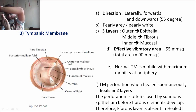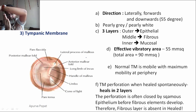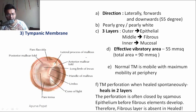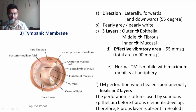Due to this orientation, when light is thrown onto the tympanic membrane, it reflects into the antero-inferior quadrant. Any pathology in the middle ear that disturbs the orientation of the tympanic membrane will also disturb the cone of light. You can assess the orientation of the tympanic membrane from the cone of light.